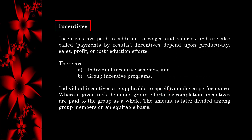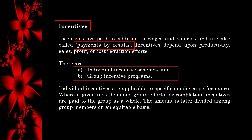Incentives are paid in addition to wages and salaries and are also called payments by result. Incentives depend upon productivity, sales profit, or cost reduction efforts. There are Individual Incentive Schemes and Group Incentive Programs. Individual incentives are applicable to specific employee performance. Where a given task demands group efforts for completion, incentives are paid to the group as a whole and the amount is later divided among group members on an equitable basis.